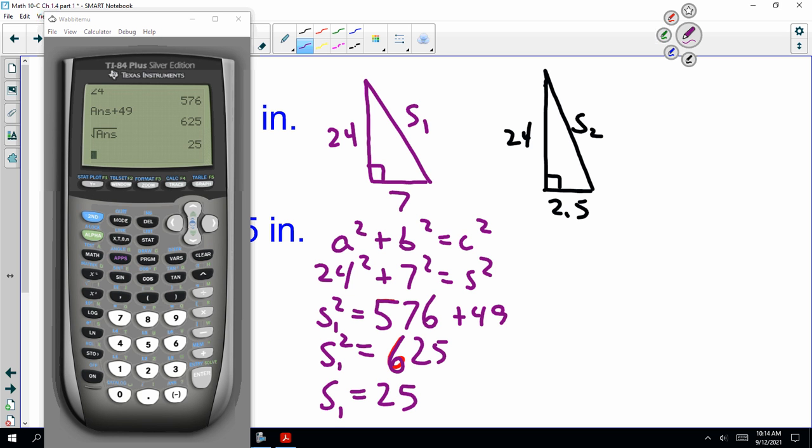Now that's slant 1. I'm going to pause the recording, and I want you guys to find the slant height for the second triangle here. Let's go.